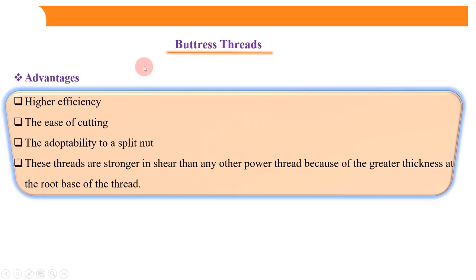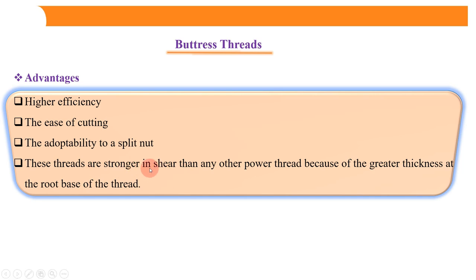The next thread profile is the buttress thread. The advantages of buttress threads are: higher efficiency, ease of cutting, and adaptability of a split nut. These threads are stronger in shear than any other power thread because of the greatest thickness at the root base of the thread. Whenever there is a shear force acting on your component, buttress thread is the first choice because of its large root thickness at the base of the thread.